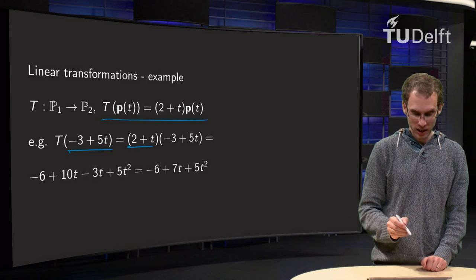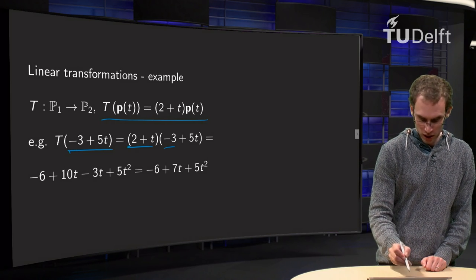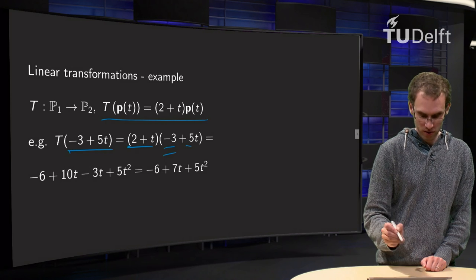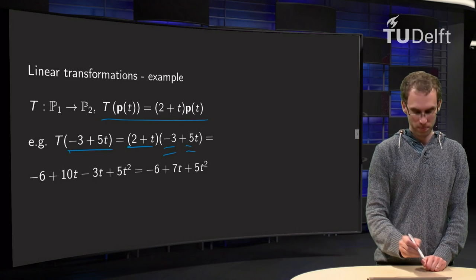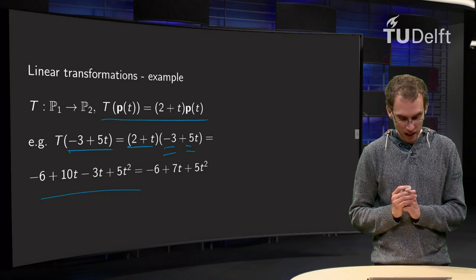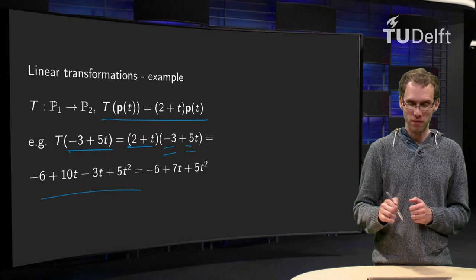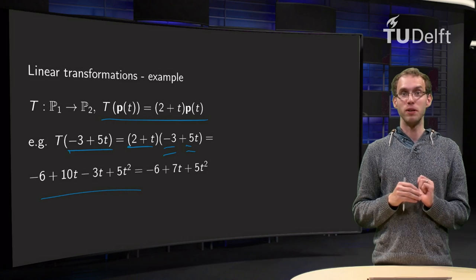So what happens? You have to work out the brackets. We get minus 6 plus 10t minus 3t plus 5t squared. And then combine the 10t and the minus 3t to plus 7t. So that's how this transformation works.